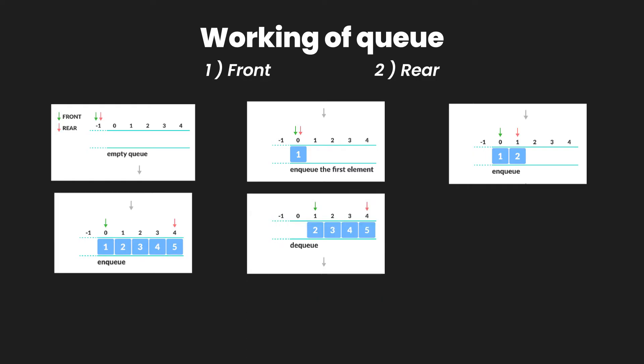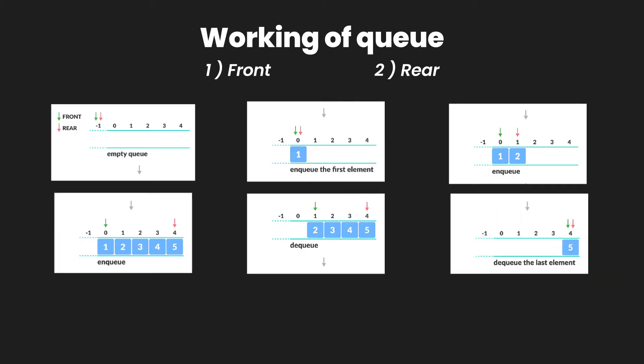When the first element is removed from the queue, the front pointer changes from zero to one, now pointing at the new front of the queue. Similarly, as elements two, three, and four finish their tasks, the front pointer eventually points at element five at index four.